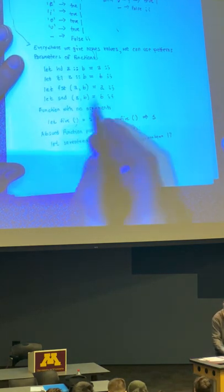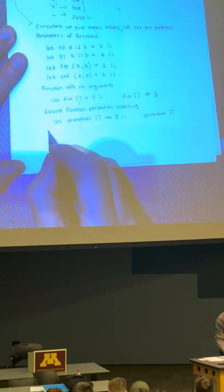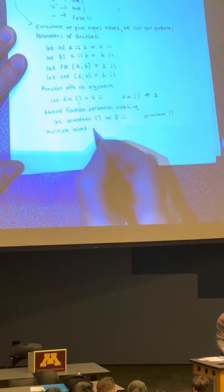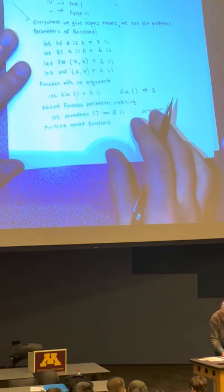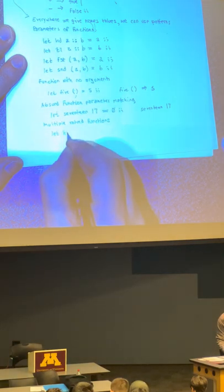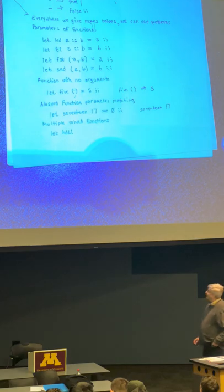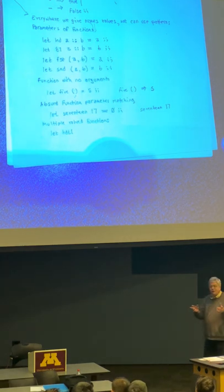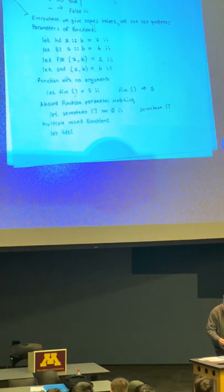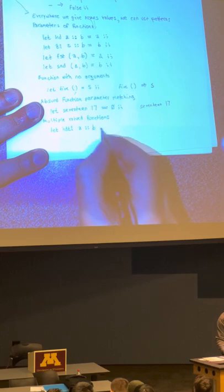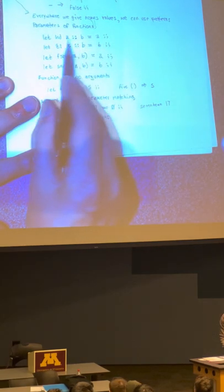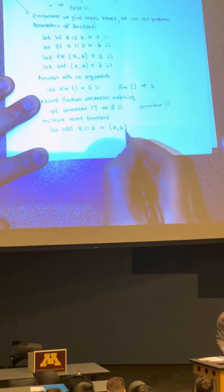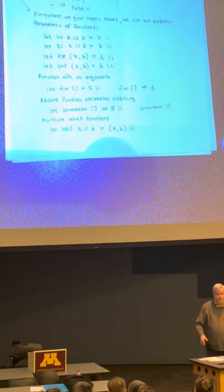This is actually kind of useful because you can use a similar mechanism to have functions that return multiple values. Let's call these multiple-value functions. I want to write a function called `hdtl` (head-tail) that takes a list and returns both the head and tail of that list. Using the pattern `A cons B`, where A is the head and B is the tail, I can return a two-tuple containing A and B — a function that effectively returns more than one value.